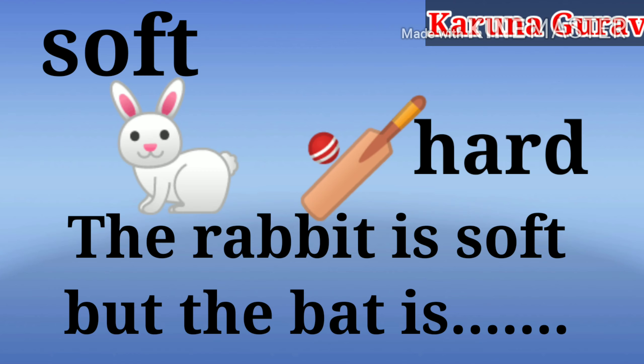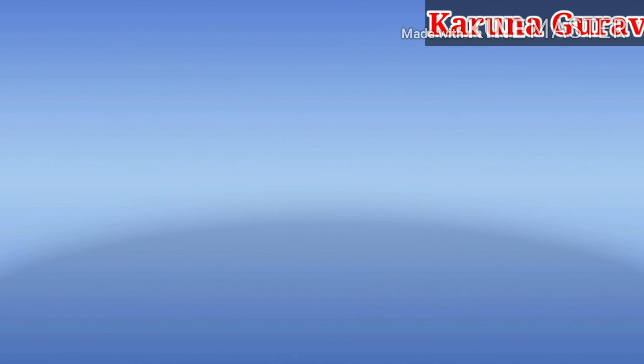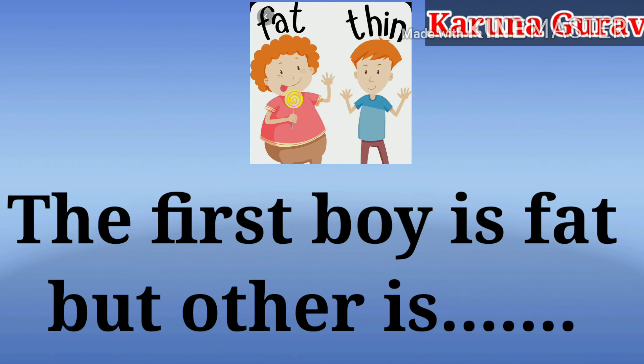Soft, Hard. The rabbit is soft, but the back is hard. Fat, Thin. The first boy is fat, but other is thin.